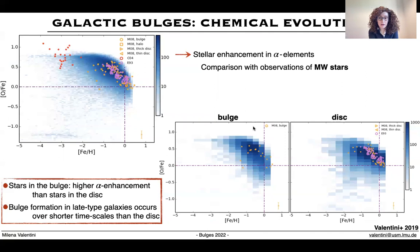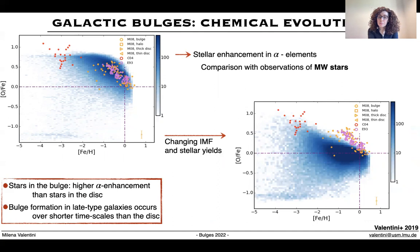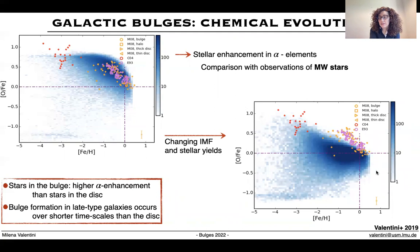Simulations are also important to quantify the impact that different components entering the chemical evolution model have on final results. For instance, we show how changing the assumed initial mass function or the sets of adopted stellar yields can impact the chemical pattern of simulated stars on the [alpha/Fe] vs [Fe/H] plane, and of course it can produce a mismatch with observations.